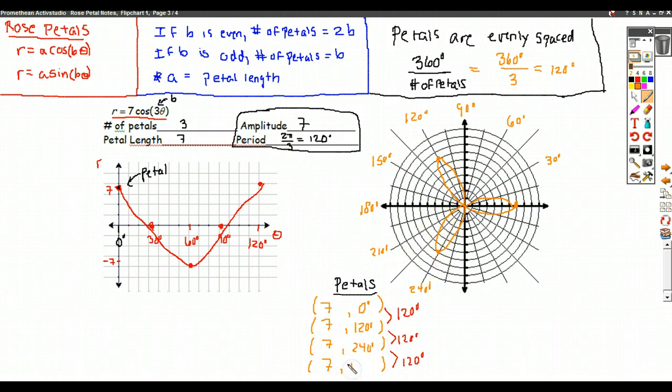And then I add 120 to that and I get 360 degrees. But now, notice, I'm really just back here. So, at that point, I'm just redrawing the same petal. And here we have it. Three petals for this rose graph.